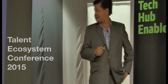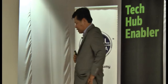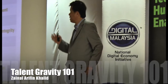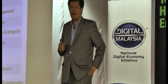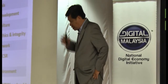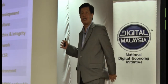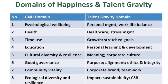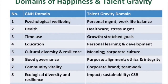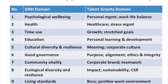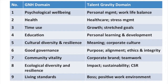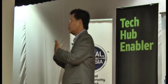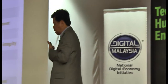These are the domains of happiness against talent gravity. This is a good summary of the day — everything I've heard from this morning is probably listed on the right-hand column: personal management, healthcare, growth, personal learning and development, meaning, purpose, corporate branding, impact, sustainability, the boss, positive work environment. Here we start to map gross national happiness to the things we need to do in relation to talent gravity.